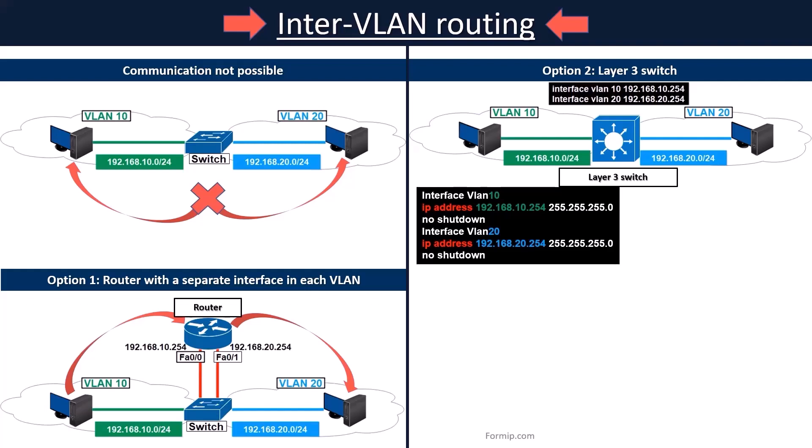In addition, a router transmits traffic through the trunk that is configured with the switch, and using a Layer 3 switch avoids this bottleneck. A Layer 3 switch is primarily a Layer 2 device that has been upgraded to have routing capabilities, and a router is a Layer 3 device that can perform certain switching functions.